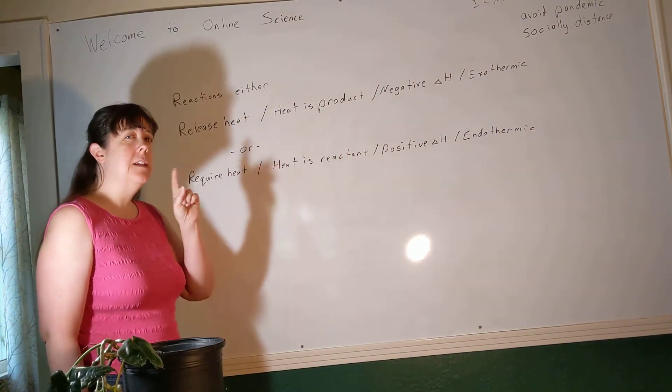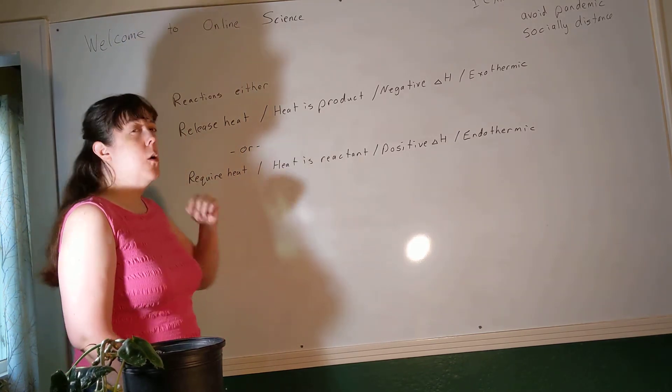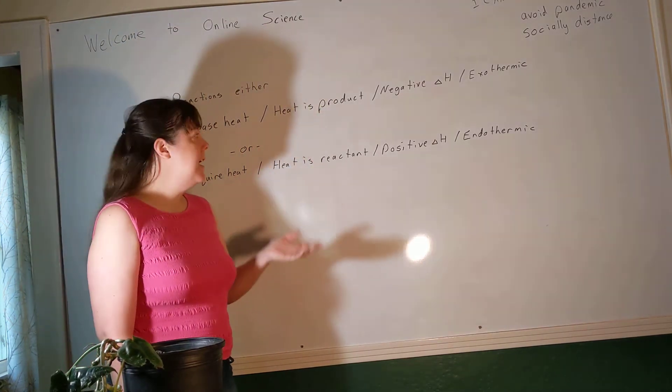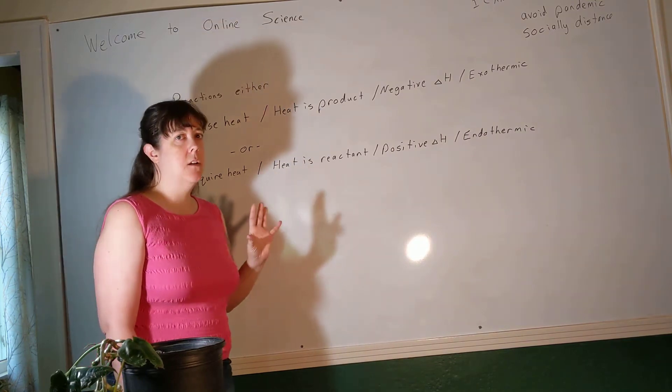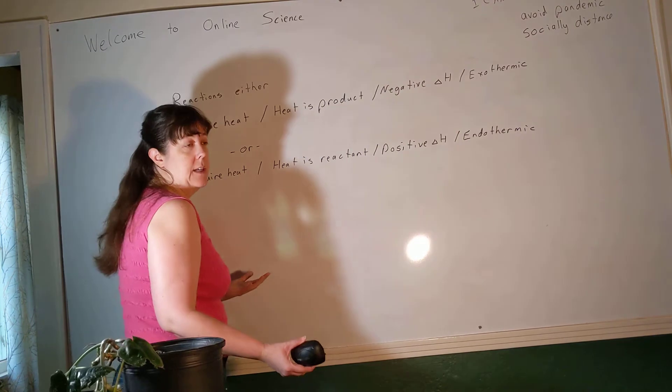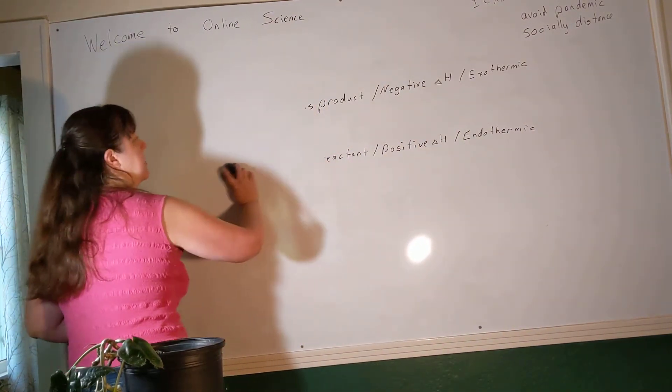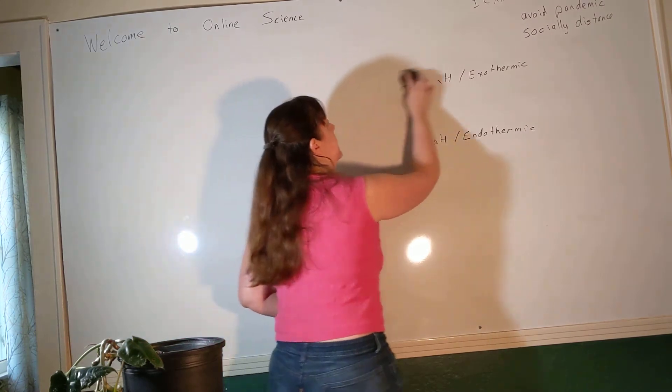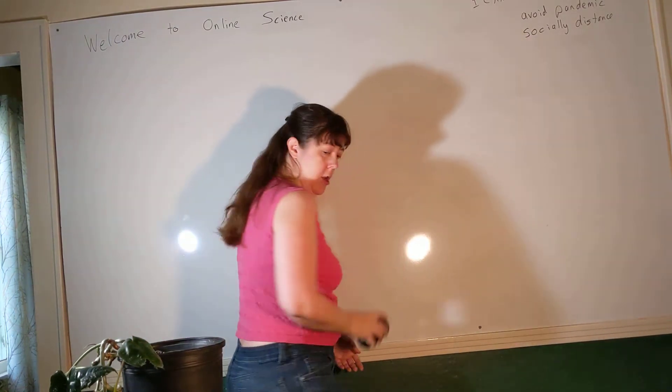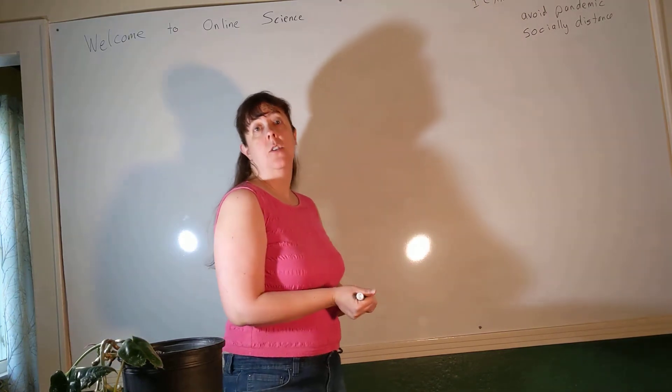But we also know that heat is a transfer. So in the case of this reaction that releases heat, where does heat go? And in the case of a reaction that requires heat, where does the heat come from? The answer to that is going to be the surroundings. And when that heat leaves the surroundings or goes into the surroundings, what's generally going to happen is that the temperature is going to change. What we want to talk about today is how do we measure the temperature change that has to do with heat.